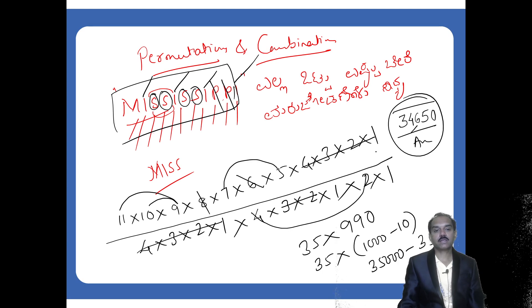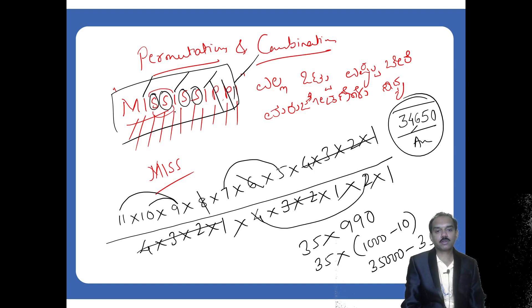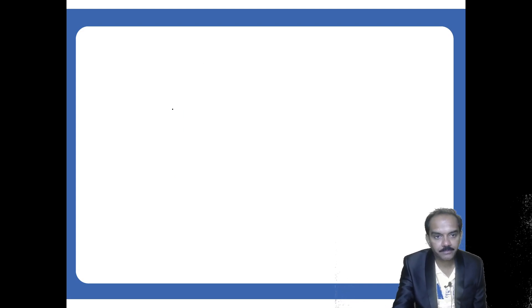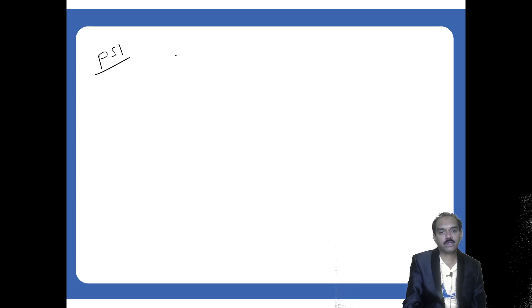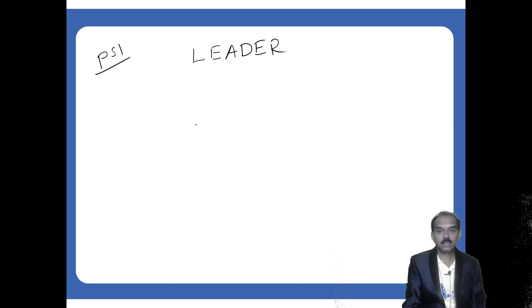In all, you can write down 34,650 different words by using all the letters of the given word MISSISSIPPI. That is the final answer. Maximum how many different words can you write by using all the letters of the word LEADER?